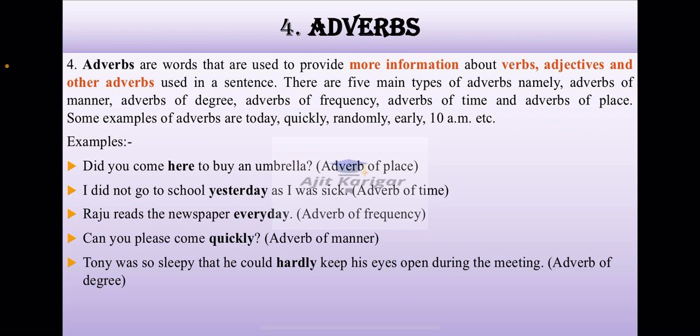The example in sentence: Did you come here to buy an umbrella? I did not go to school yesterday as I was sick. Raju reads the newspaper every day. Can you please come quickly? Tony was so sleepy that he could hardly keep his eyes open during the meeting. The words which are in bold letters are indicating the adverbs here. They are giving more information about verbs, adjectives, and other adverbs in a sentence.